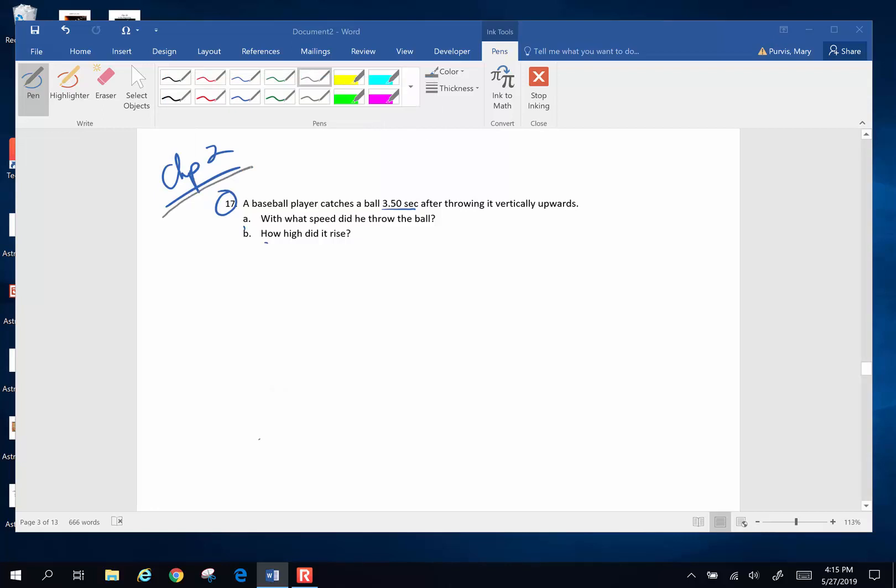Hi everyone! We're continuing with some Chapter 2 homework problems, and this time we do number 17. A baseball player catches a ball 3.5 seconds after throwing it vertically upwards. With what speed did he throw the ball upward, and how high did it rise?